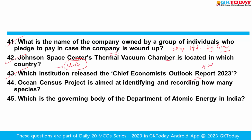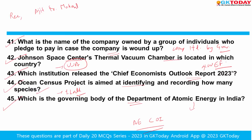Which institution released the Chief Economist Outlook Report 2023? The answer is the World Economic Forum. The Ocean Census Project is aimed at identifying and recording how many species? The answer is 1,000,000. This is an ambitious global initiative aimed at identifying one million unknown marine species in the next 10 years to improve understanding of the deep sea. The governing body of the Department of Atomic Energy in India is the Atomic Energy Commission of India, and Mr. Ajit Kumar Mohanty has been appointed as its chairman and secretary.